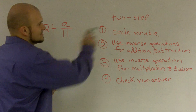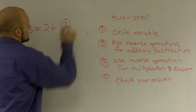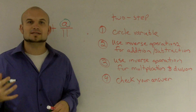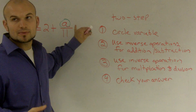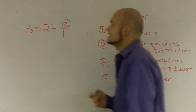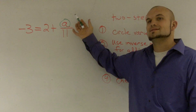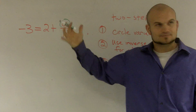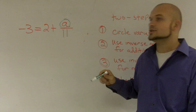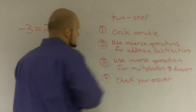The first thing I'd like to do is circle the variable. The reason why I circle the variable is because I want to remind myself and always keep track of — that is the variable I'm going to solve for. When I say solve for the variable, I mean I'm going to get that variable by itself; it's going to be isolated. So first thing I need to do is circle my variable.